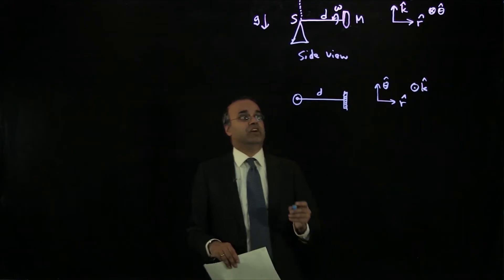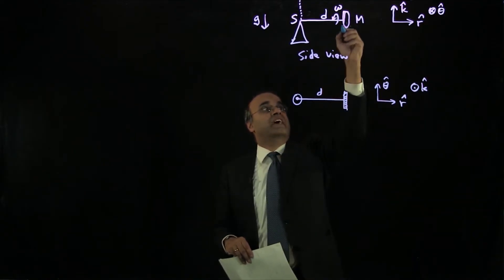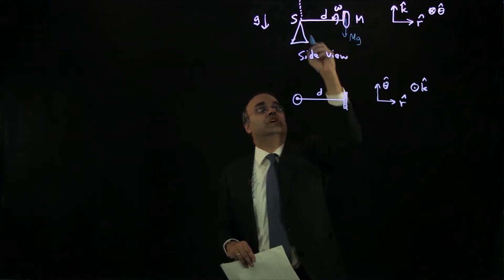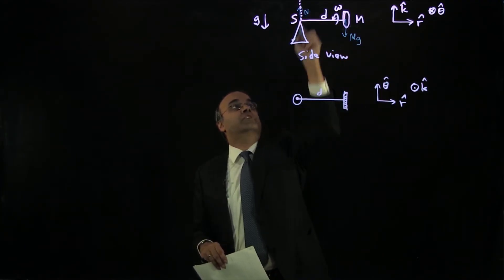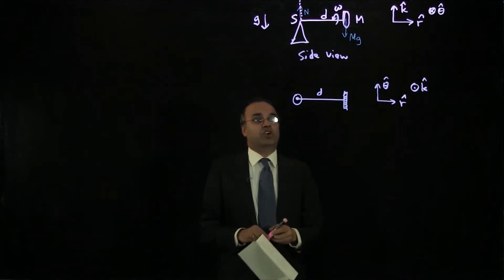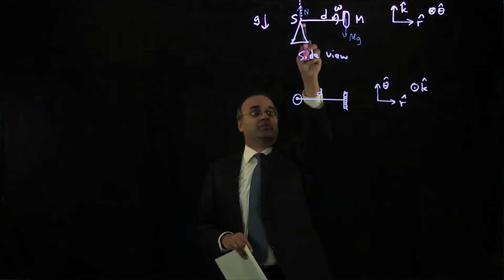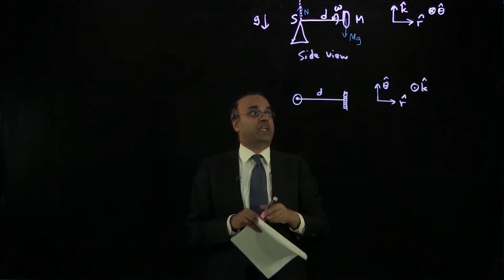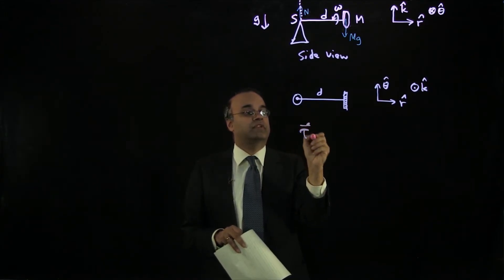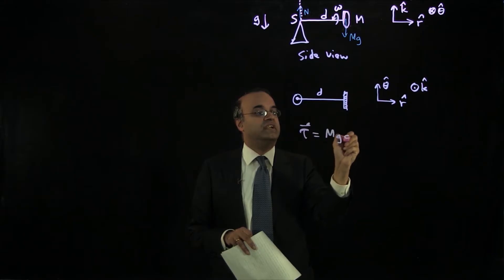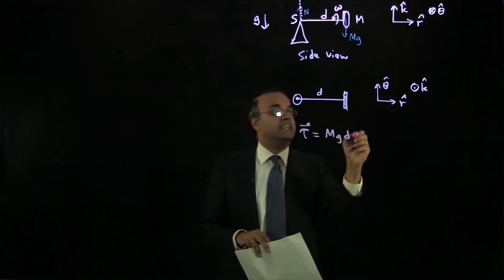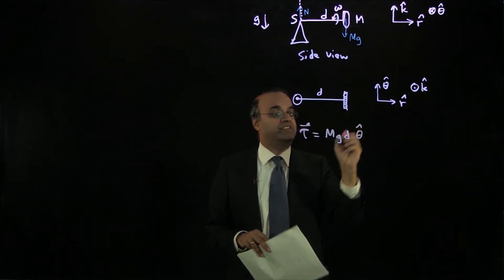Let's draw the forces acting on the diagram. The weight mg acts downward at the center of mass of the wheel, and there is a normal force acting upward at the pivot point. The torque is given by r cross F, which relative to point S at distance d gives a torque of magnitude mgd. By applying the right-hand rule, the torque is directed in the plus theta-hat direction.